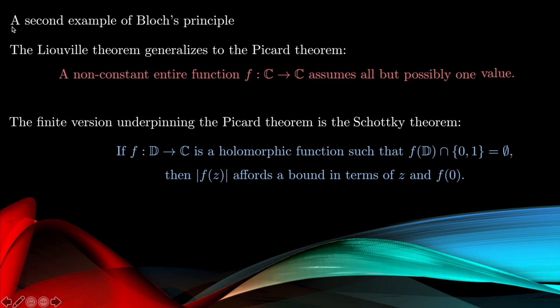The Schottky theorem says that if we take a holomorphic map from the disk to the complex plane that omits the values 0 and 1 in its image, then we can bound the modulus of f in terms of the absolute value of z and the value at the origin. It is worth noting that the original proof of the Schottky theorem gave no explicit bound — the bound was implicit.